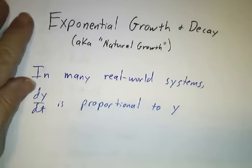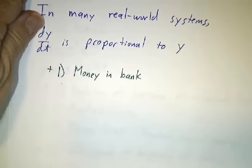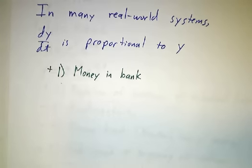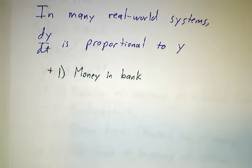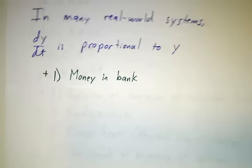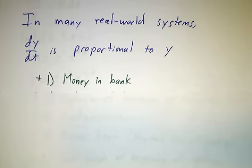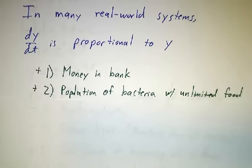So let's look at some examples. There's the amount of money that you have in the bank. It grows because the bank gives you interest and the more money you have, the more interest you get. There's a population of bacteria with an unlimited food supply. You have twice as many bacteria, you have twice as many bacteria dividing, and the bacteria grow twice as fast.